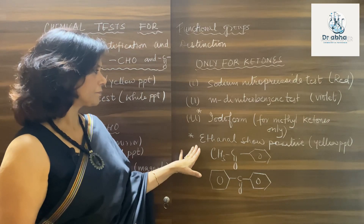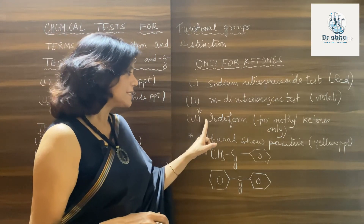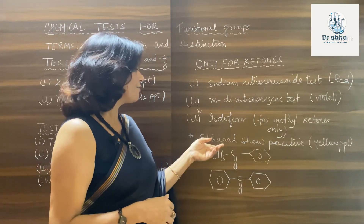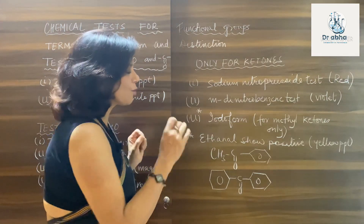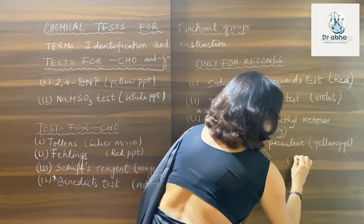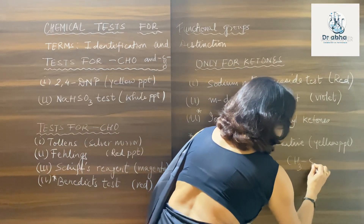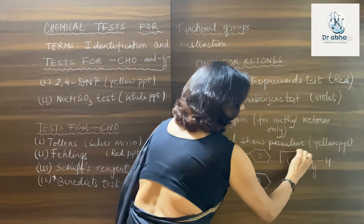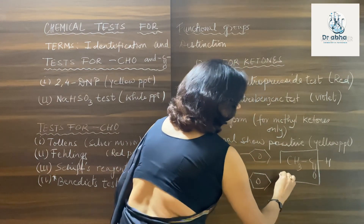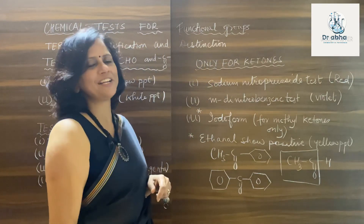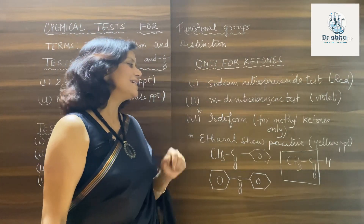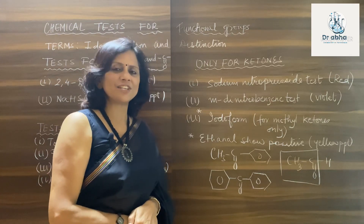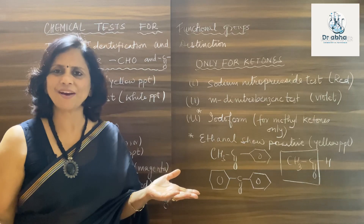Certain aldehydes also show the iodoform test. For example, ethanal (acetaldehyde) has the structure CH₃CHO — just look at this group and you can see a methyl ketone-like arrangement. So even certain aldehydes show this test positive. Ethanal will definitely show the iodoform test positive.